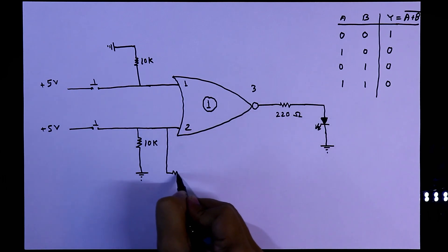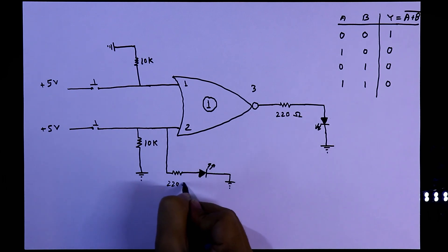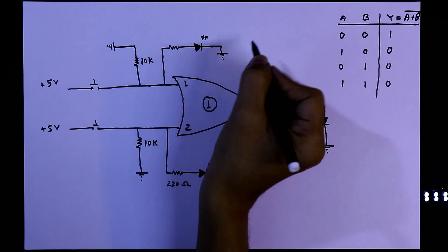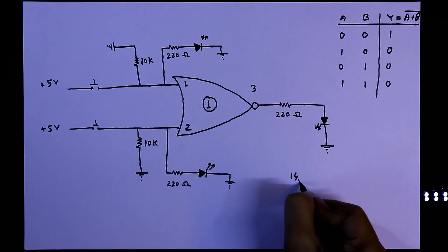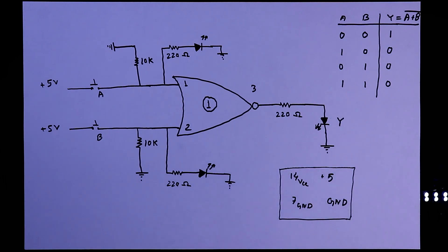Now to see the inputs we also connect LED with the inputs. With this resistor is connected and then an LED and it is connected to the ground. These two are power supply pins and we must connect them. So we will see this on the breadboard.